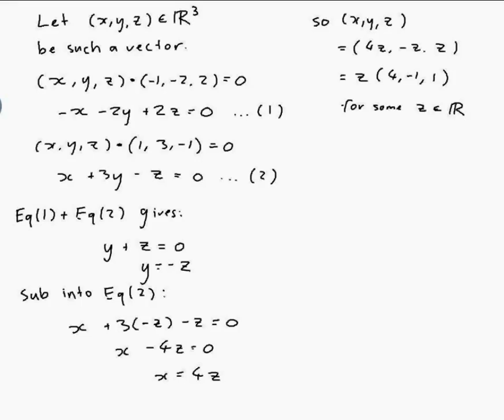If I choose z such that I divide by the length of 4, minus 1, 1 then I should be okay. So the length of 4, minus 1, 1 is equal to the square root of 4 squared which is 16 plus minus 1 squared which is 1 plus 1 squared which is 1 which is the square root of 18.